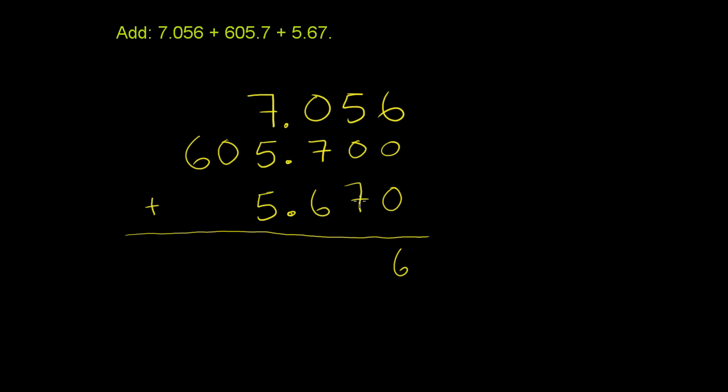5 plus 0 plus 7 is 12. You write the 2 in the hundredths place and carry the 1. 1 plus 0 plus 7 is 8 plus 6 is 14. Write the 4, regroup the 1 into the 1's place.